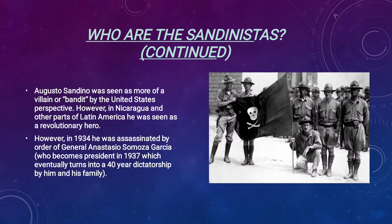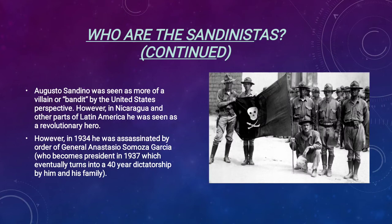Augusto Sandino was seen as more of a villain or a bandit from the United States' perspective. However, in Nicaragua and other parts of Latin America, he was seen as a hero of the revolution — the little guy trying to take down the big guy. In 1934, he was assassinated by order of General Anastasio Somoza Garcia, who later became president in 1937. This is the beginning of the 40-year dictatorship by him and his family. Somoza Garcia was the first to take over, and initially it was as president — they weren't openly declaring a dictatorship. Here is an image of U.S. Marines holding Sandino's battle flag in 1932, shortly before they left Nicaragua.